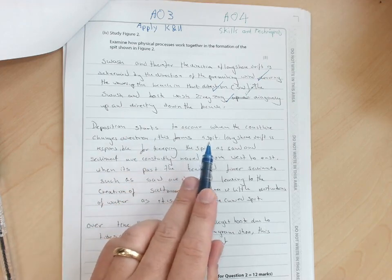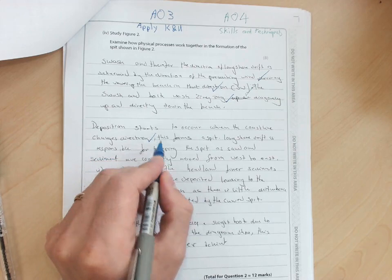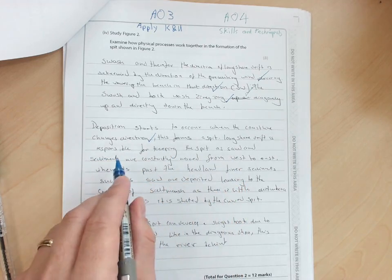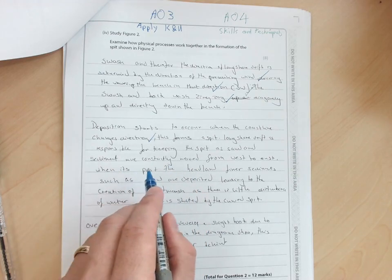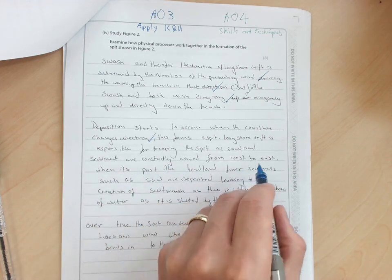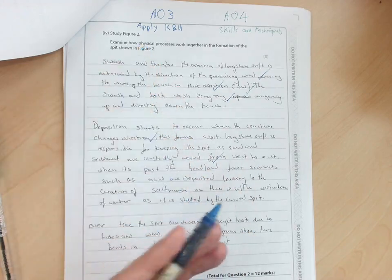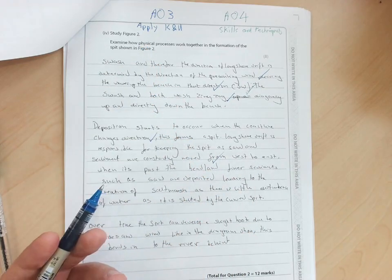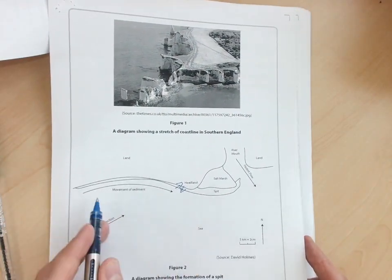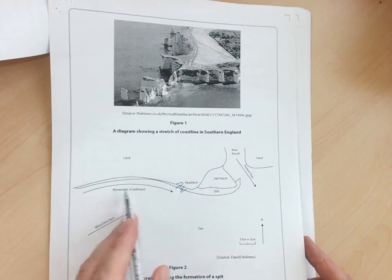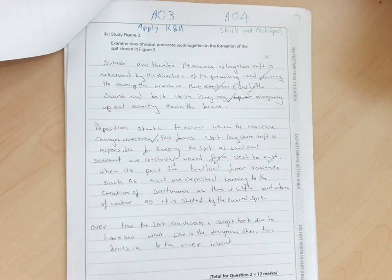Deposition starts to occur when coastline change direction. That's true. This forms a spit. Longshore drift is responsible for keeping the spit as sand and sediment constantly move from west to east. Constantly moving, that's once again AO3. She's shown her knowledge and understanding of how spits form and how they are maintained. Because she said west to east, now she's talking about how to use the diagram. So she's interpreting the resource as well.